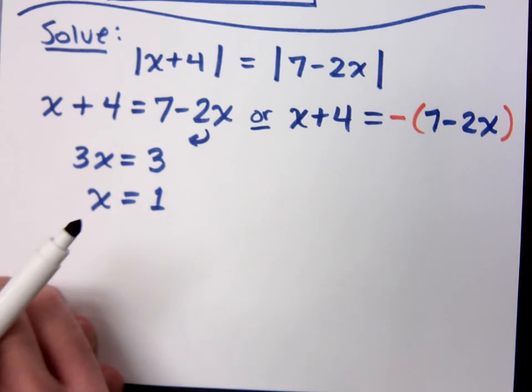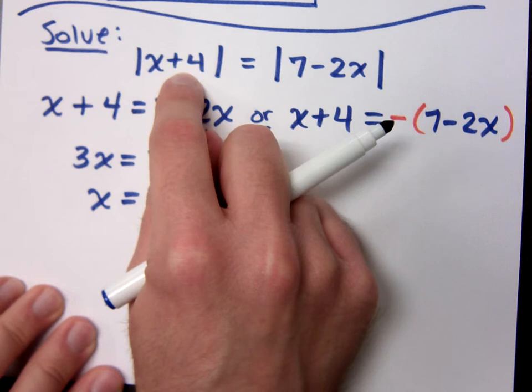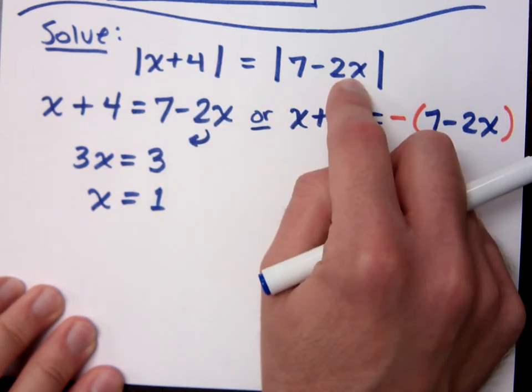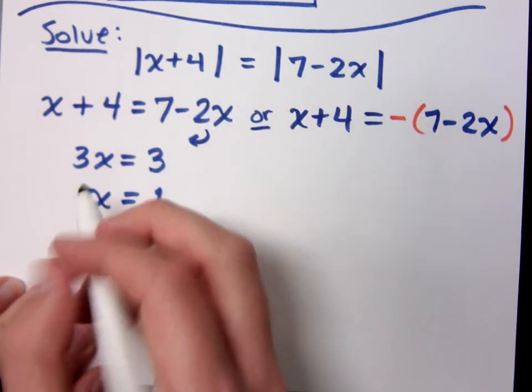Now, quickly check this to make sure everything is all right. 1 plus 4 is 5. 7 minus 2 is also 5. So, that is true. That one works out.